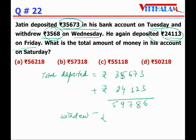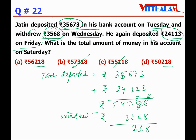From that we subtract the withdrawal of ₹3,568. Working through the subtraction gives ₹56,218. Always keep your eyes on the options as you calculate — just check the options and you will often get the answer without completing every step. No need to calculate 100% every time.